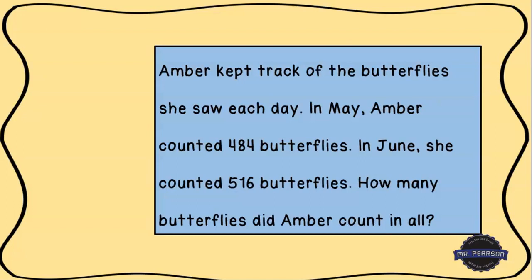Let's read that one more time together. It says: Amber kept track of the butterflies she saw each day in May. Amber counted 484 butterflies; in June she counted 516 butterflies. How many butterflies did Amber count in all?